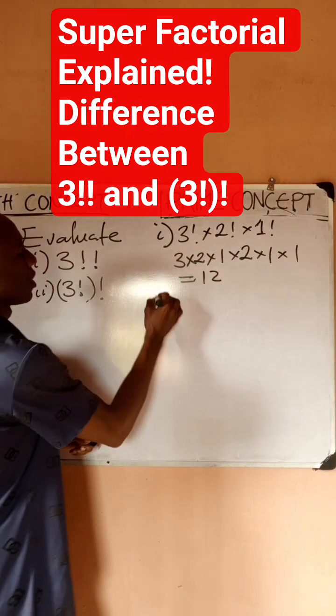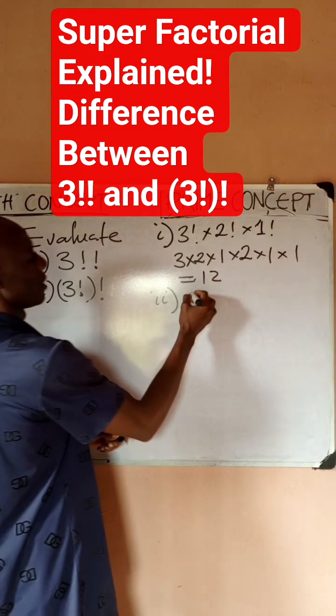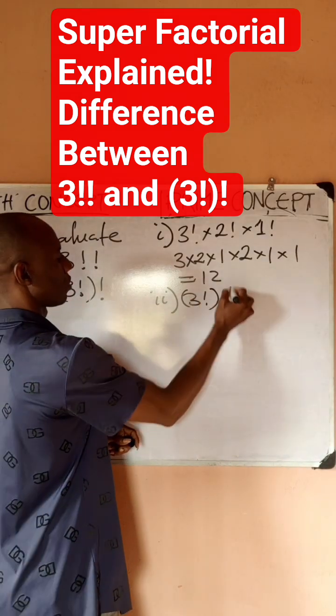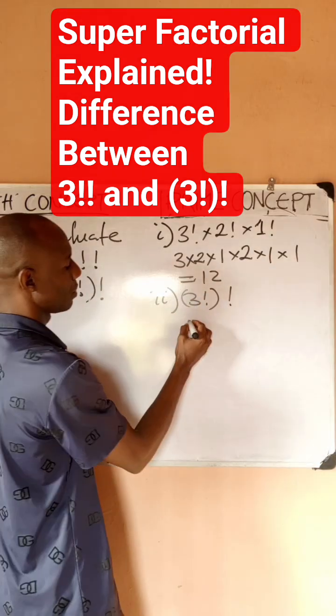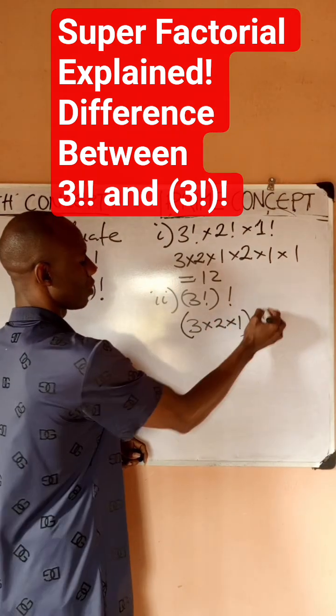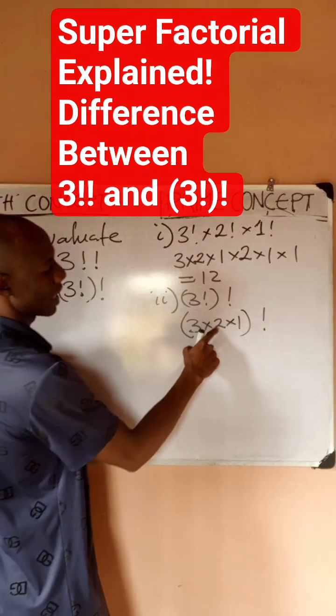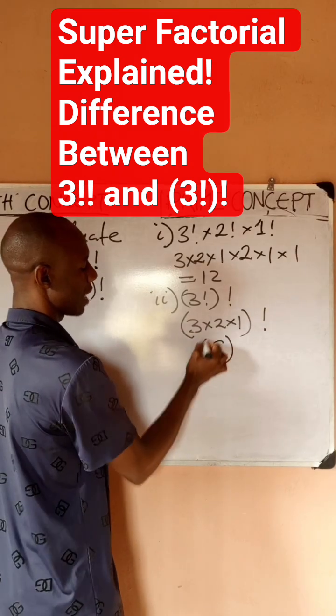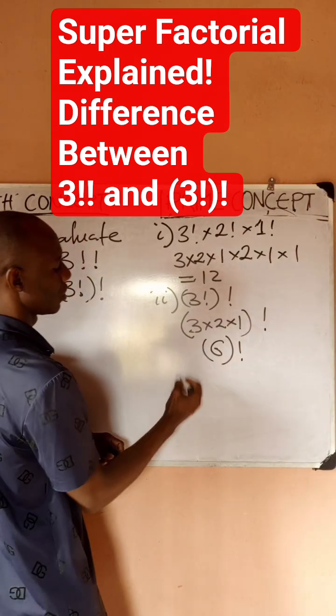While the second case, this would mean (3!)!, so this would simply be 3×2×1, all factorial. 3×2 is 6, so I have 6! which is same as 6×5×4×3×2×1.